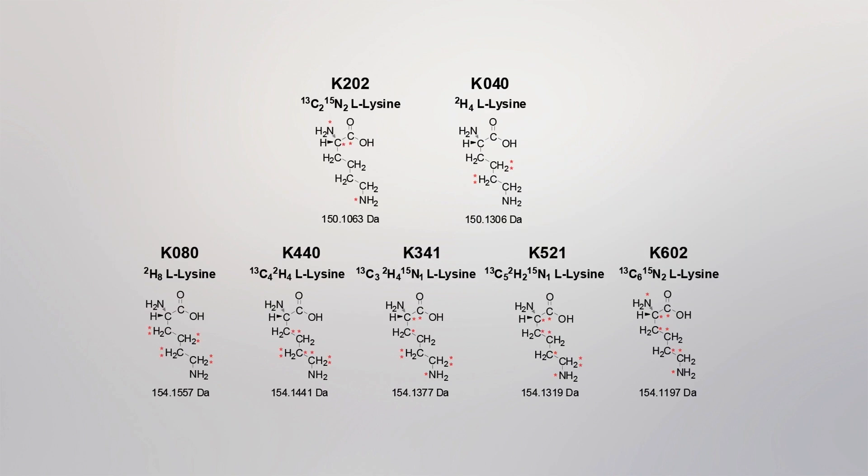An example of a NeuCode amino acid is lysine-202, which contains two heavy carbon atoms and two heavy nitrogen atoms. This amino acid can be paired with lysine-040, which contains four heavy deuterium atoms. Since both amino acids have the same nominal mass, they are indistinguishable at low mass resolutions, but are resolved using high-resolution mass spectrometry for quantification.